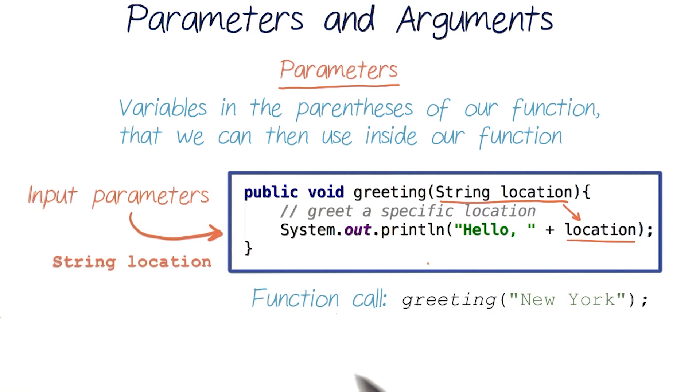But now, when I call this function greeting, I can't just type greeting with empty parentheses. And that's because this function expects a string location as input. So in my function call, I have to put in a string, like the location New York. And this specific input is called an argument.